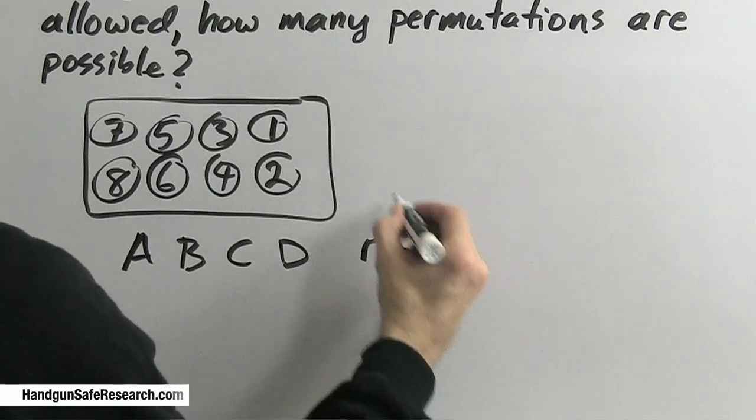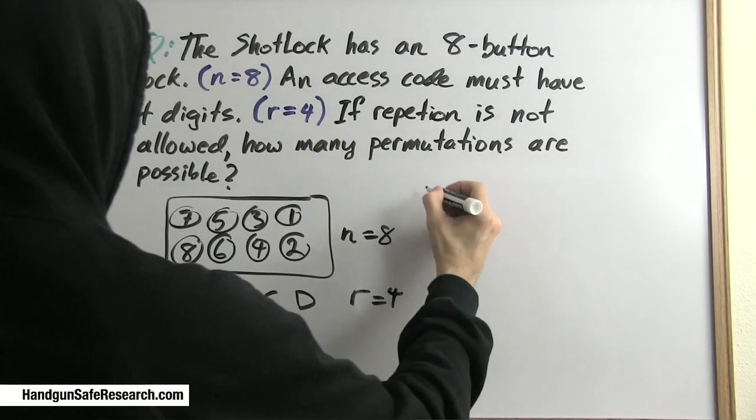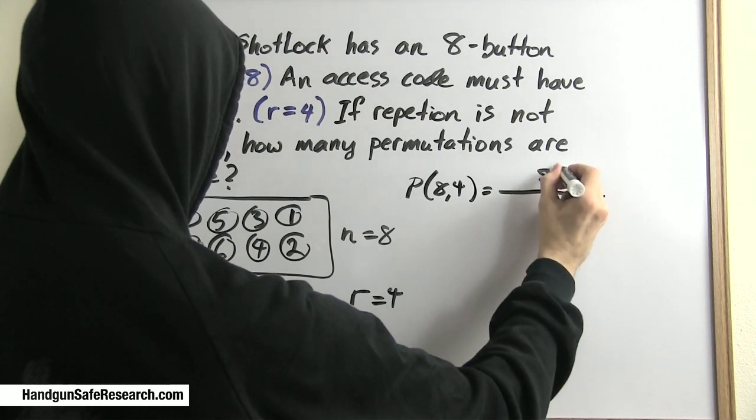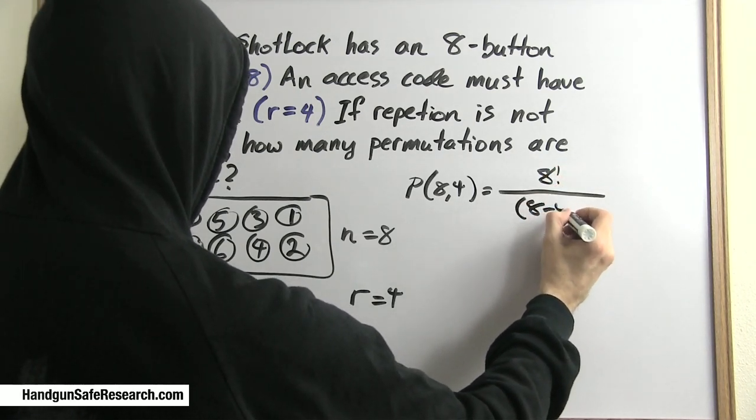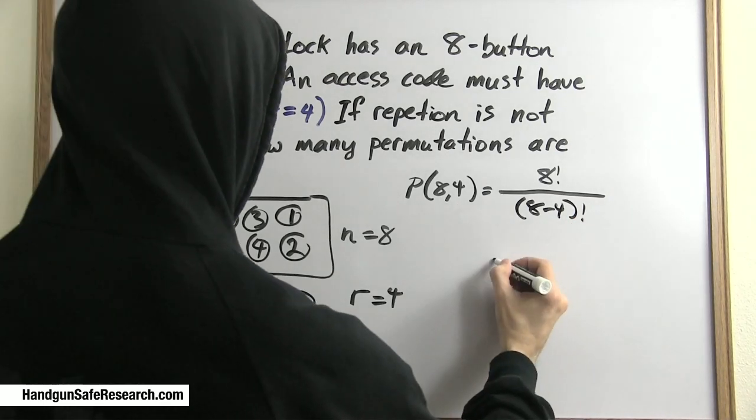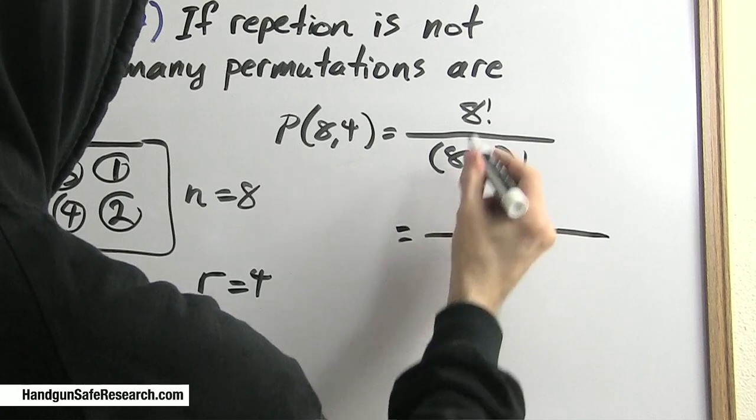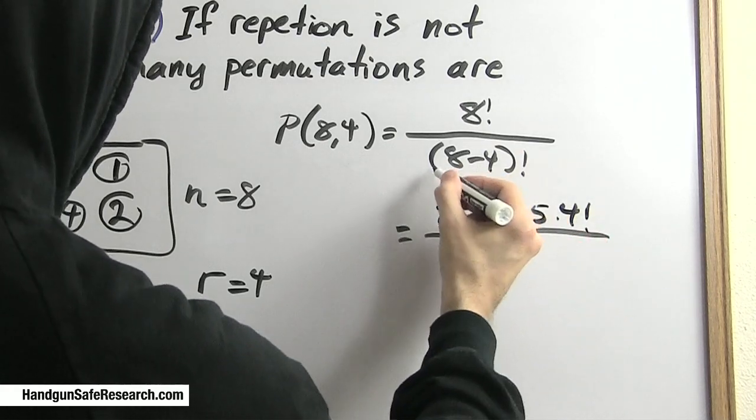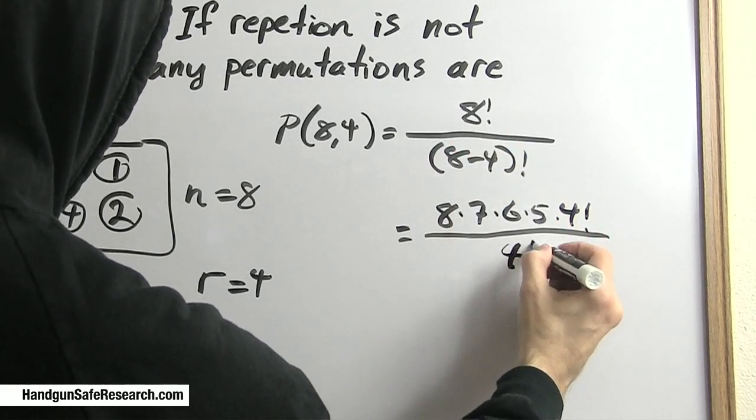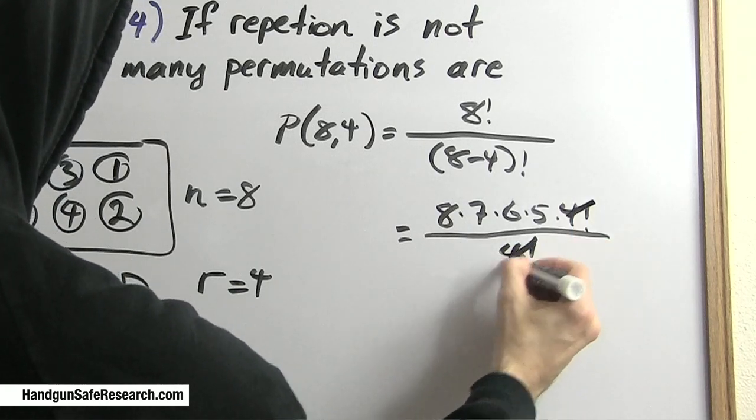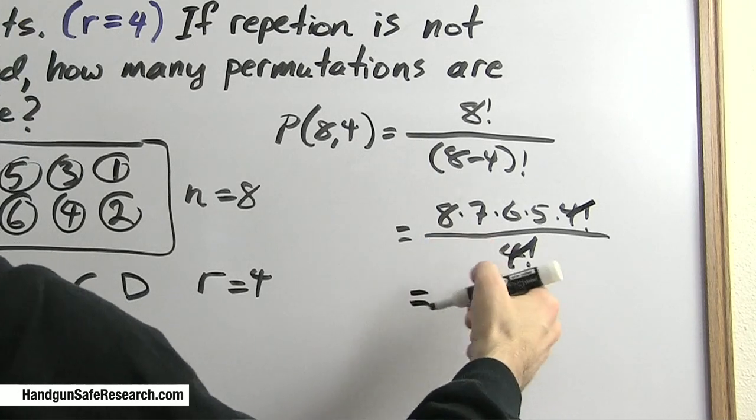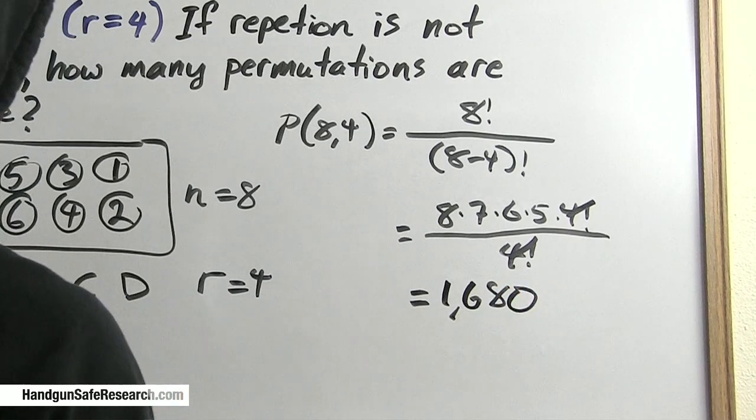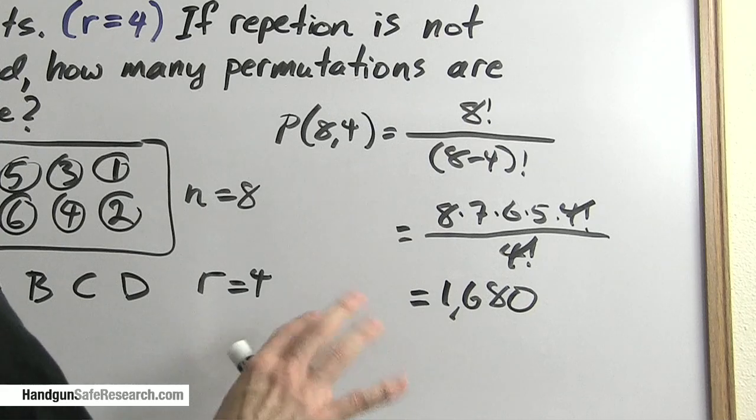So r equals 4, n equals 8. Let's plug these in: 8 factorial over (8 minus 4) factorial. I'll write out the numerator like this: 8 times 7 times 6 times 5 times 4 factorial, because I recognize that 8 minus 4 is going to leave me with factors I can cancel out. And I already know that 8 times 7 times 6 times 5 is 1,680, which is perfectly good. It's within keeping with what California's firearm safety device standards require.